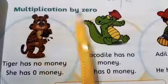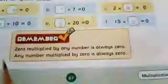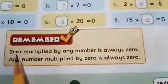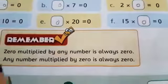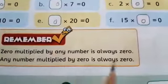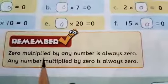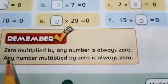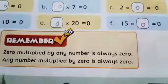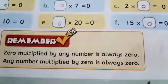Page number 67. We are starting multiplication by 0. Write down date and date. Remember, 0 multiplied by any number is always 0. Any number multiplied by 0 is always 0. Students, when you multiply 0 with any number, the answer will be 0. And if you multiply any number with 0, the answer will be 0.